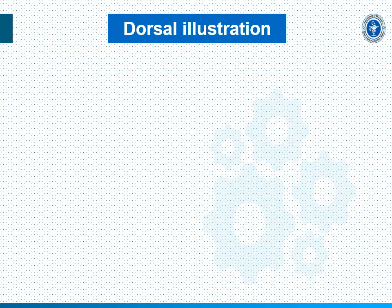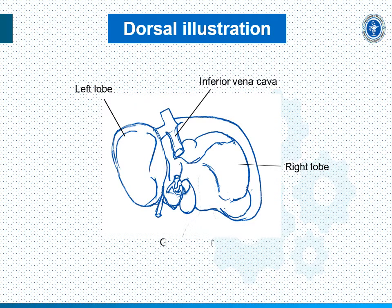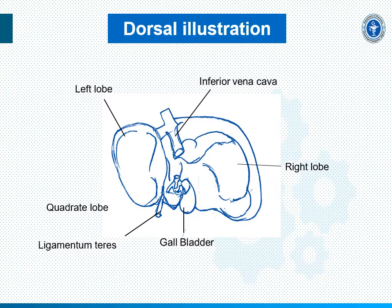Now let us see the dorsal illustration of the liver. Here is a diagrammatic representation of the liver from the dorsal side. The different parts are: the left lobe, the inferior vena cava, the right lobe, the gall bladder, the ligamentum teres, and the quadrate lobe. These are all the different parts of the dorsal illustration of the liver structure.